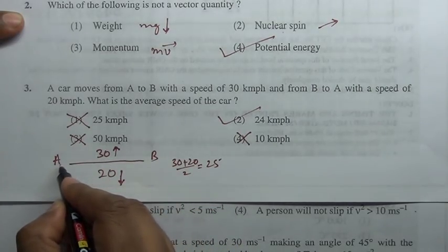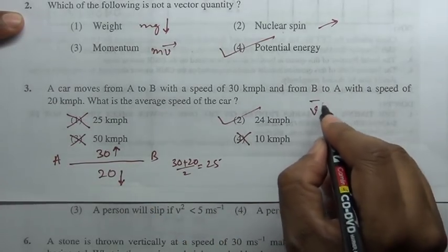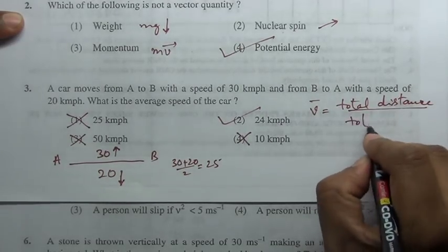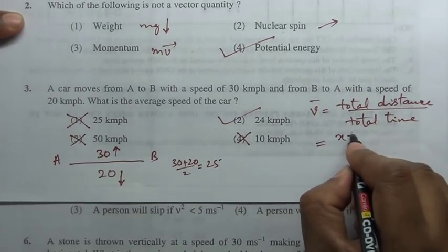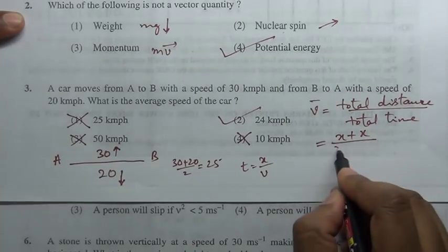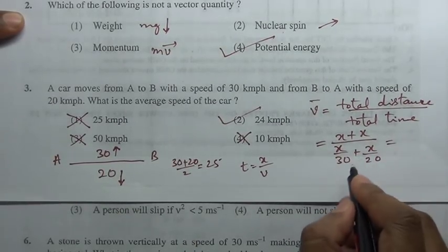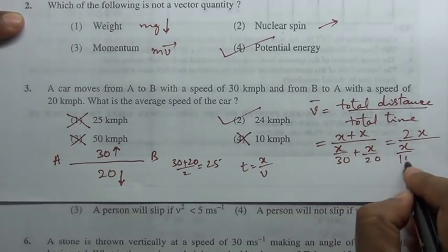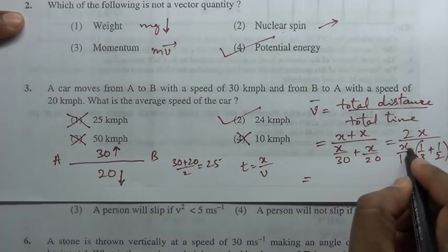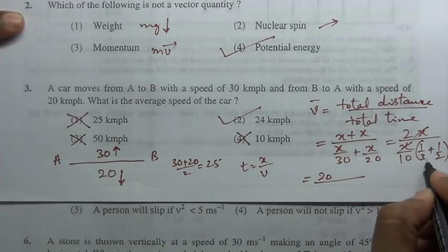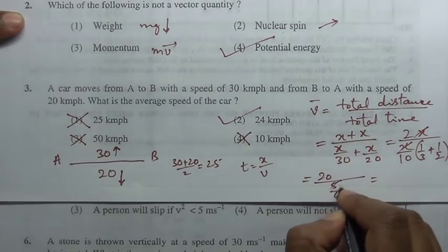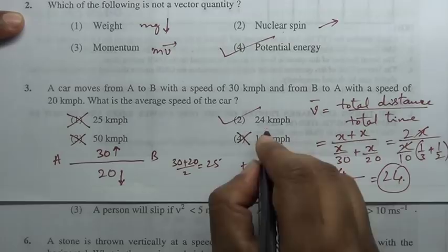Now let us work it out. This is x, two equal distances. x plus x is 2x. Therefore average speed equal to total distance traveled by total time taken. Total distance is x plus x. Time taken to travel first distance is x by 30, plus x by 20. Numerator is 2x. x by 10 is common factor, then 1 by 3 plus 1 by 2, equal to 20 by 5 by 6. It is 24, that's the answer.